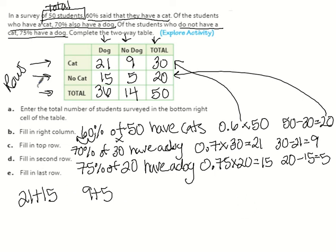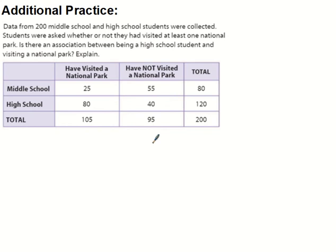It might help to follow these steps going forward — underlining the important things and making sure to change percentages to decimals is really important. Now: data from 200 middle school and high school students were collected. They were asked whether or not they visited at least one national park. Is there an association between being a high school student and visiting a national park?